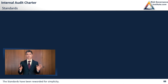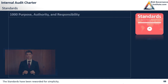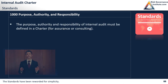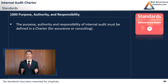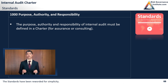Now let's look at Standard 1000, which addresses the internal audit charter. Being a nice round number, it signals its importance. Standard 1000 says the purpose, authority, and responsibility of internal audit must be defined in a charter, whether for assurance or consulting activities. You do not have the option of not having an internal audit charter. If there is no internal audit charter, that should be your work for today.